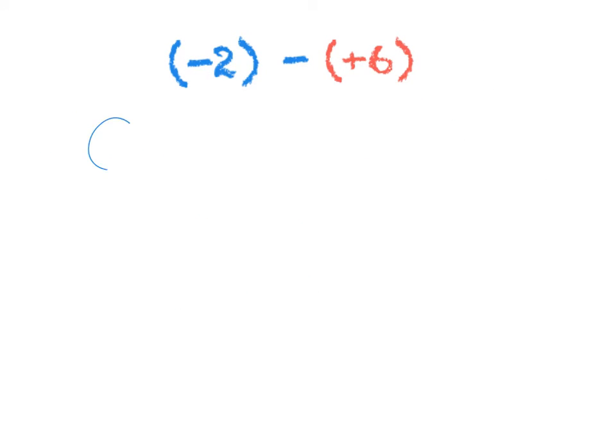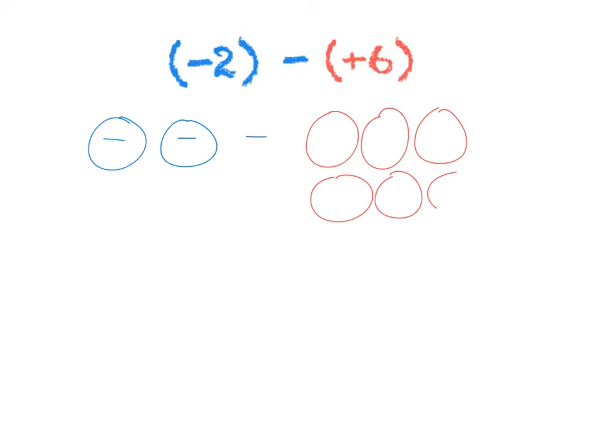Let's start with a negative number first this time. Negative two counters. Subtract positive six. Once again, I can't do negative subtract positive. They're two different things. I need to get one, two, three, four, five, six positive counters over here.